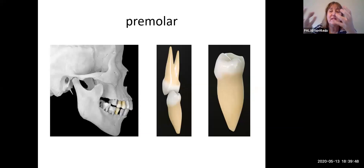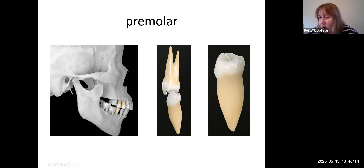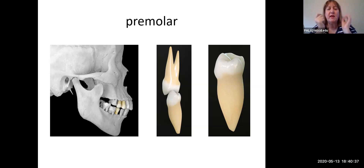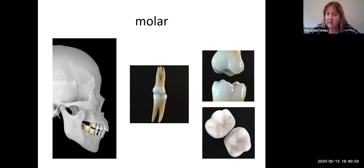The premolar's exposed surface is basically a mixture of the molar and canine. From some directions it looks pretty flat and students might think it's a molar, but it doesn't have two or three roots. From the side you can see pokiness, so students also confuse it for a canine. Anytime you're going to call something a canine or a molar, stop and think — could it possibly be a premolar? This is the tooth that more students get wrong than all others combined.